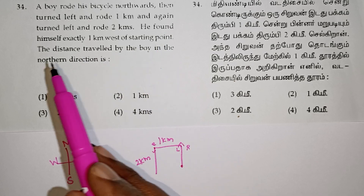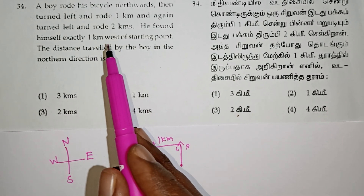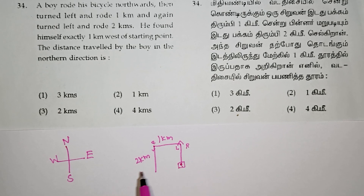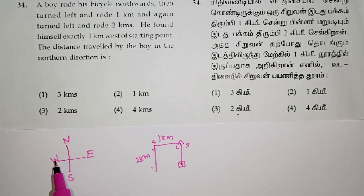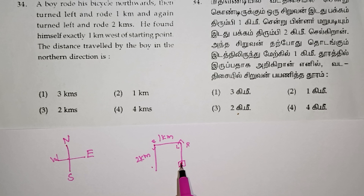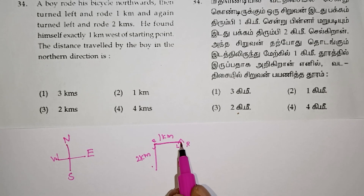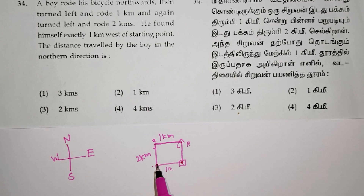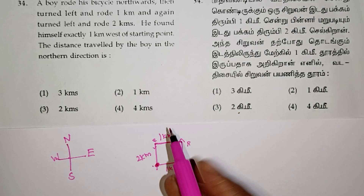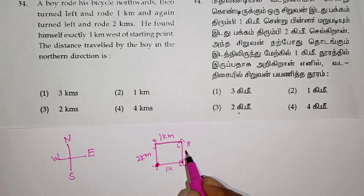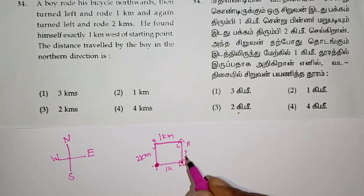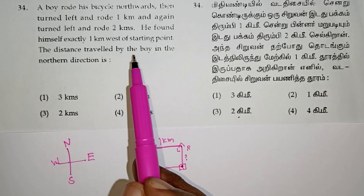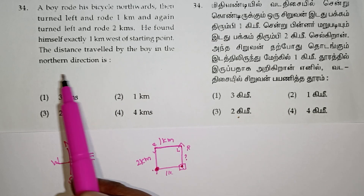He found himself exactly 1km west of the starting point. If you travel to the right-hand side, you can travel to the north. The distance traveled by the boy in the north direction.